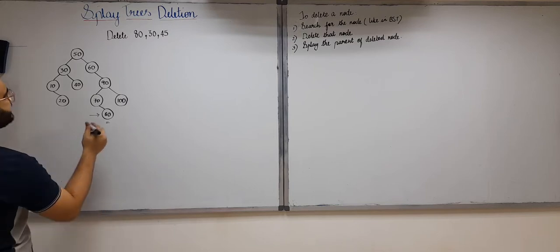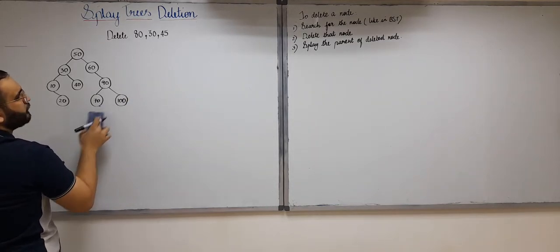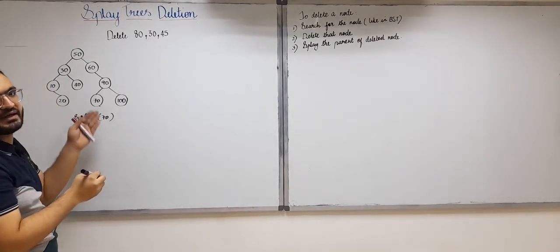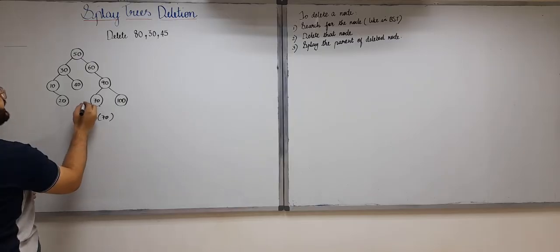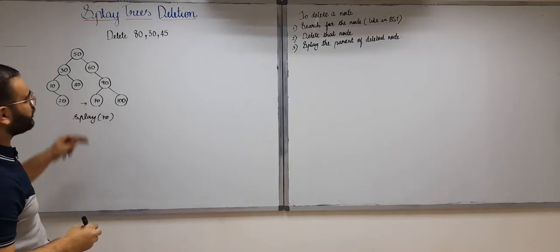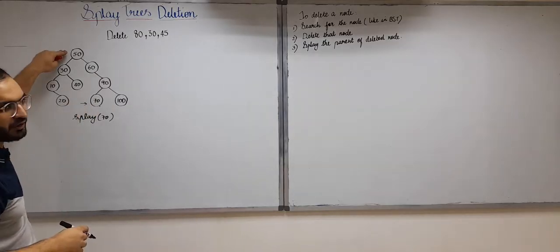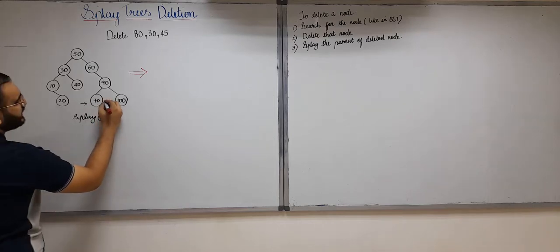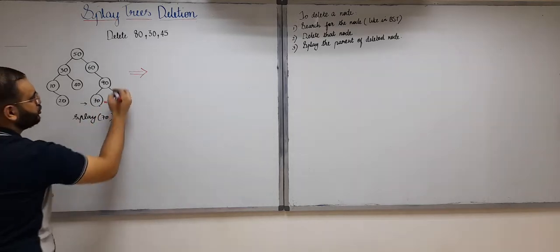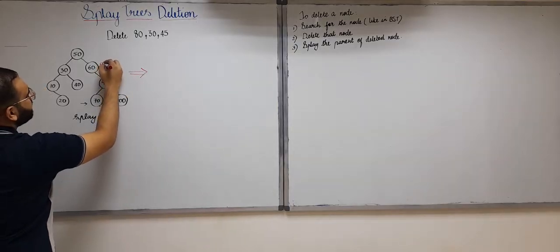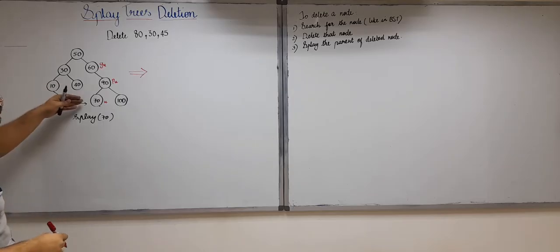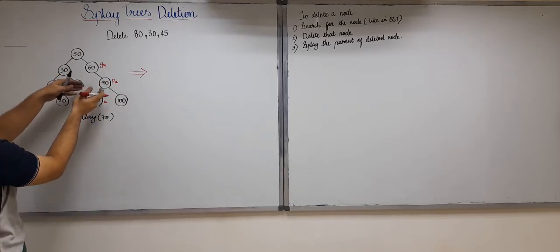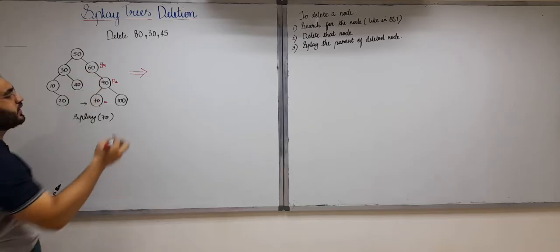Now we delete 80 as per the second step. But we also need to splay 70 — because 70 was the parent of the deleted node 80. By splaying, we mean bringing 70 to the root of the splay tree. Now, which splay operation do we perform first? The node to be splayed is u (70), its parent is pu (90), and its grandparent is gu (60). The direction from grandparent to parent is right, and from parent to u is left — two opposite directions — so we perform a zig-zag operation.